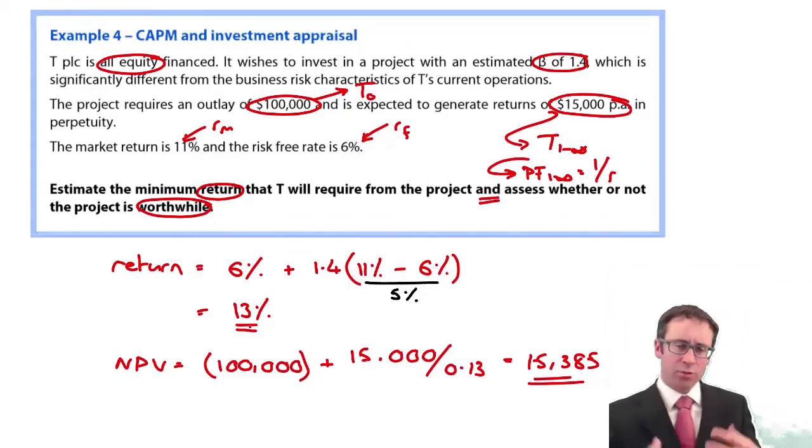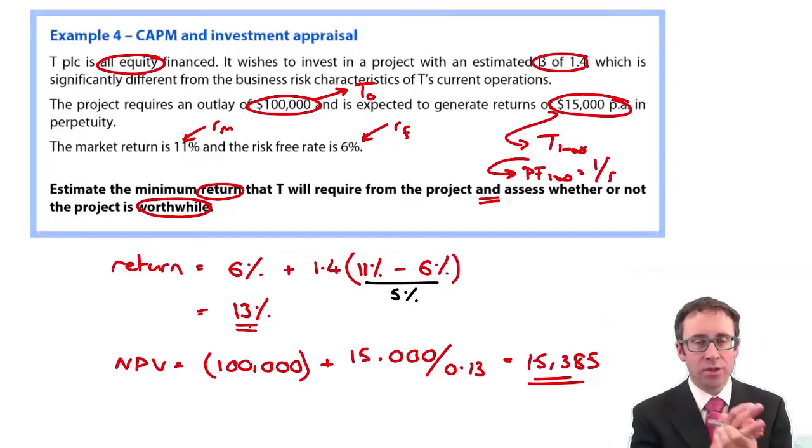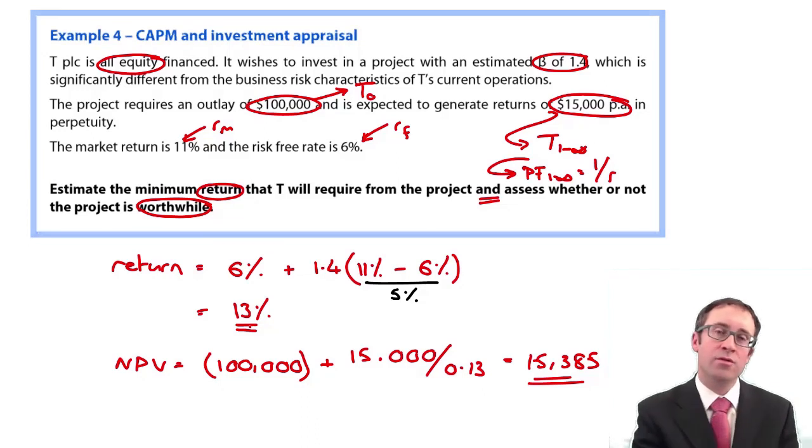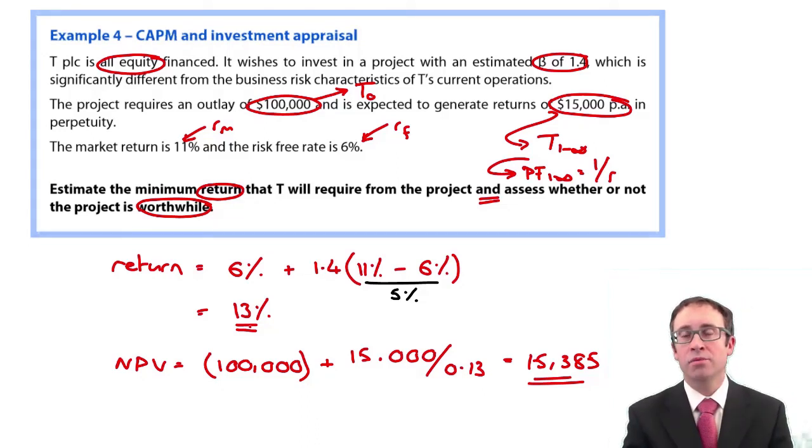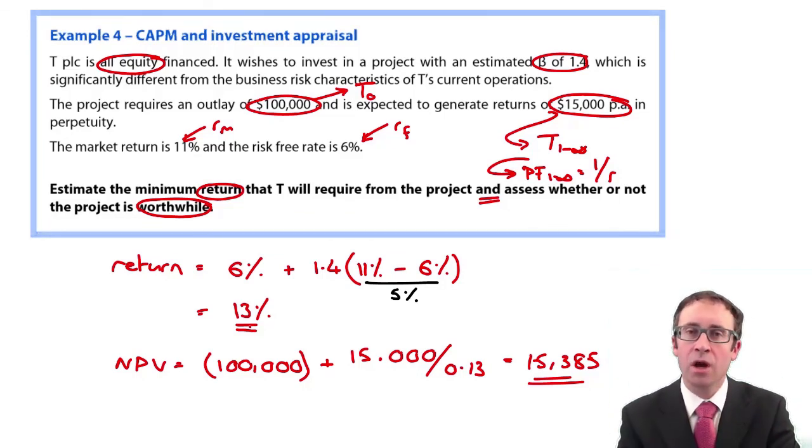So that just begins to introduce the fact that you might have to work out a capital asset pricing model return for an all equity finance business and then use that to appraise a project using NPV techniques. Pretty simple, isn't it? Questions will get much harder. They'll get more challenging within the example. Let's just keep it simple and then you can build up your knowledge as you go along.